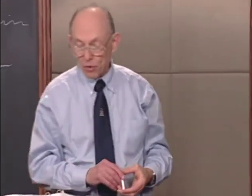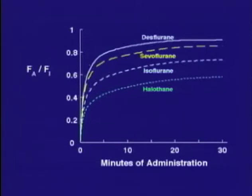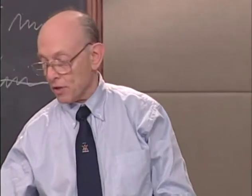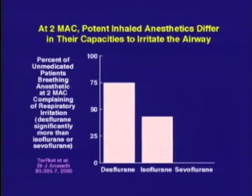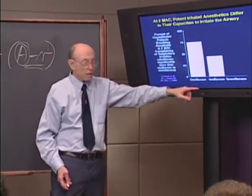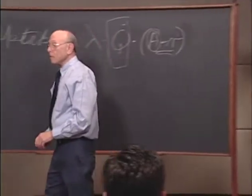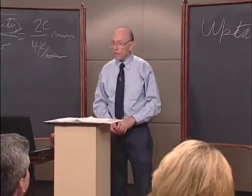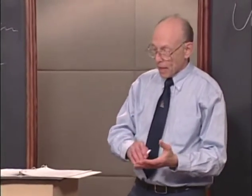If solubility were the only factor, induction would be most rapid with desflurane and least rapid with halothane. But there's another factor: pungency. Desflurane is pungent and causes airway irritation, precluding its use for induction. Sevoflurane has a great advantage in its absence of pungency — making it the preferred agent for inhalation induction. It has both low solubility and absent pungency.